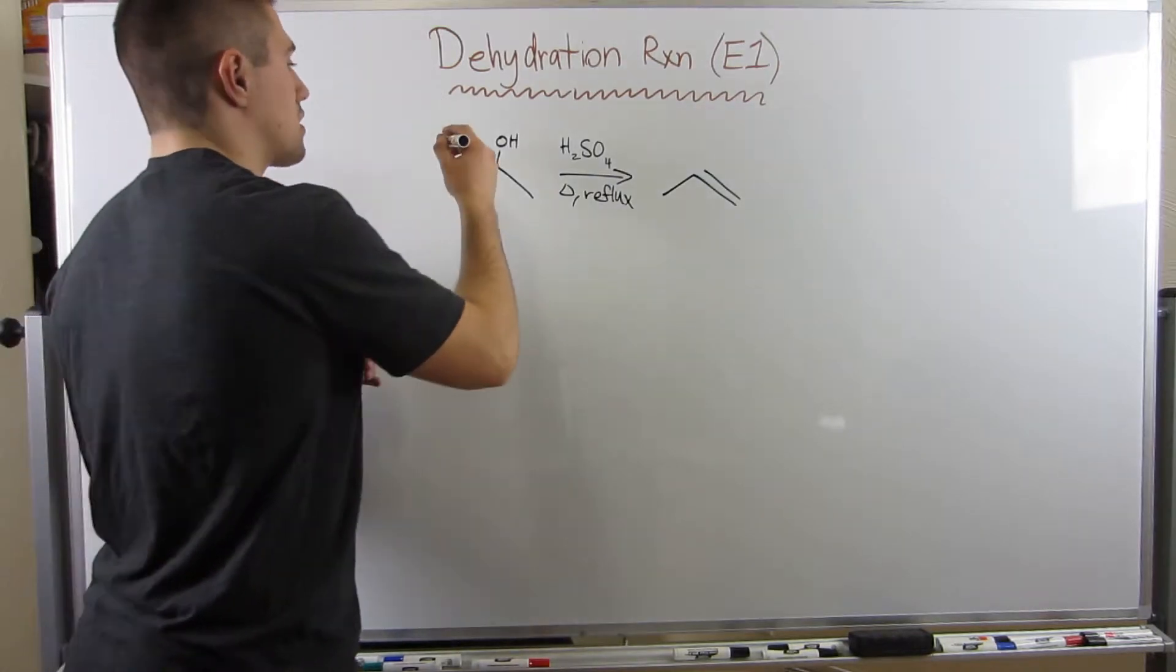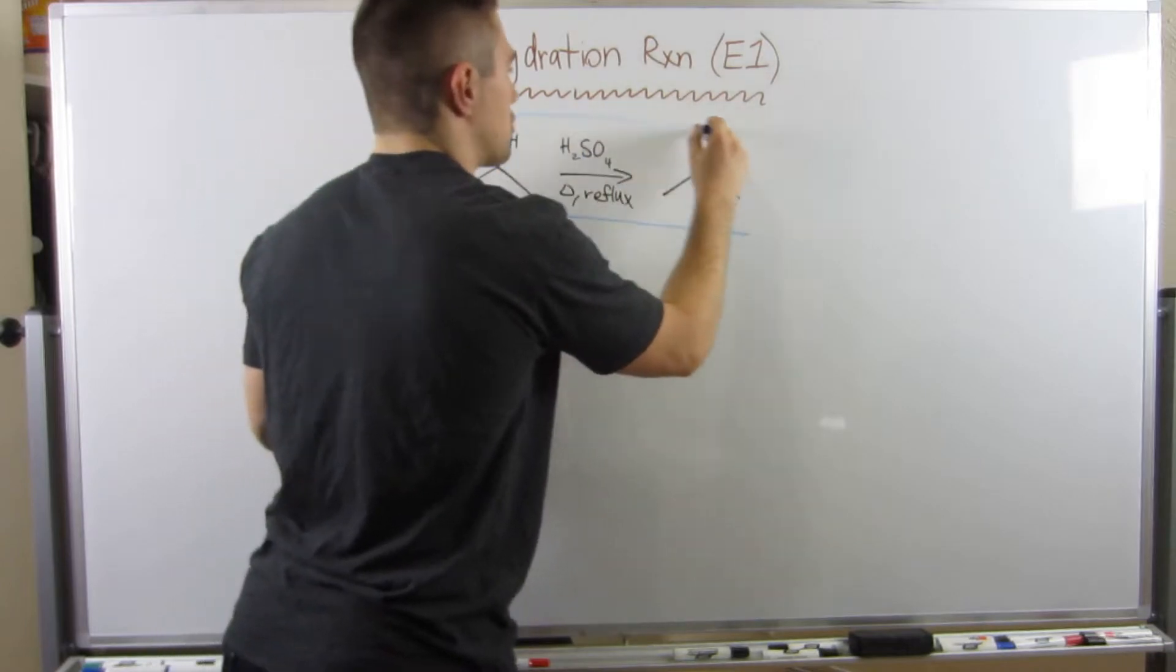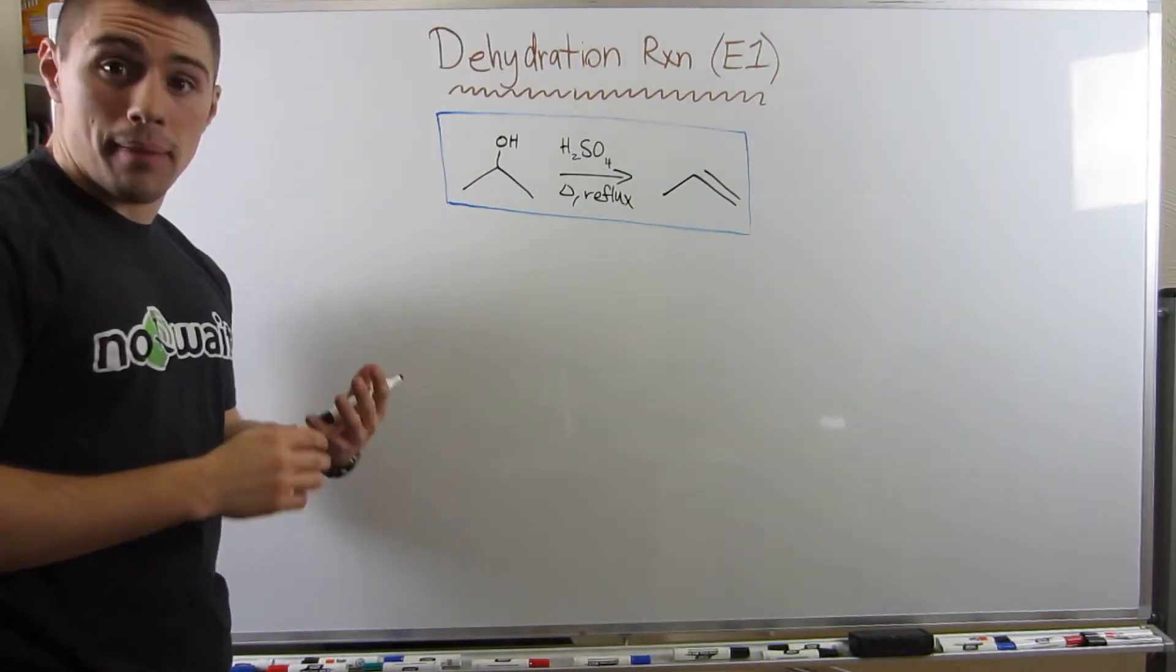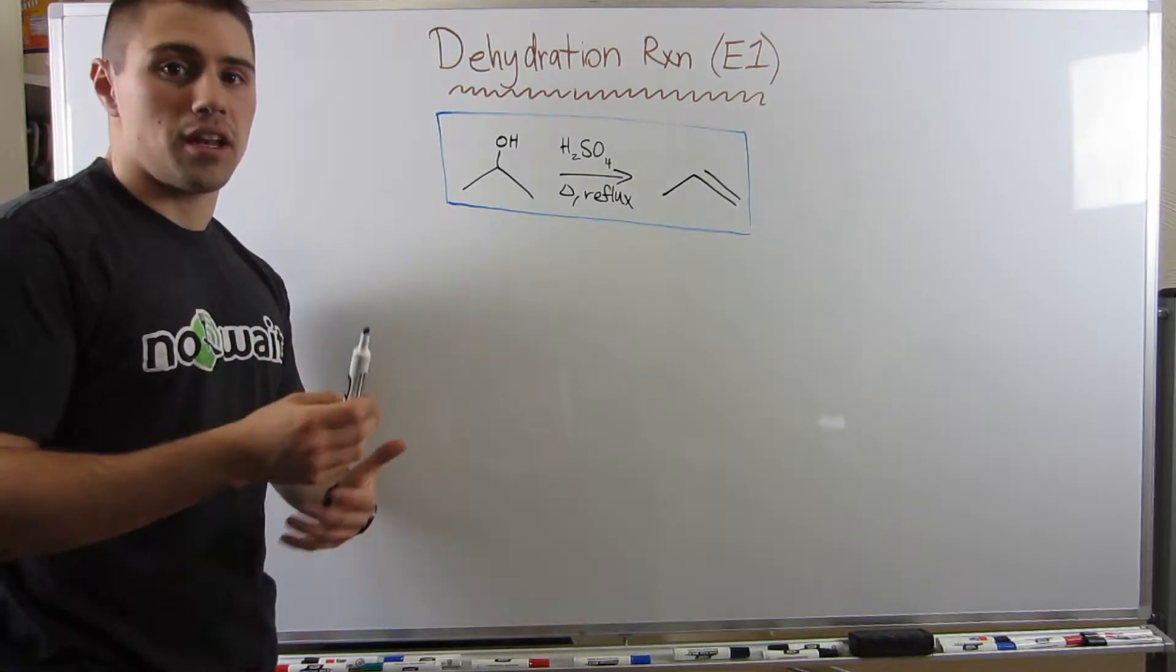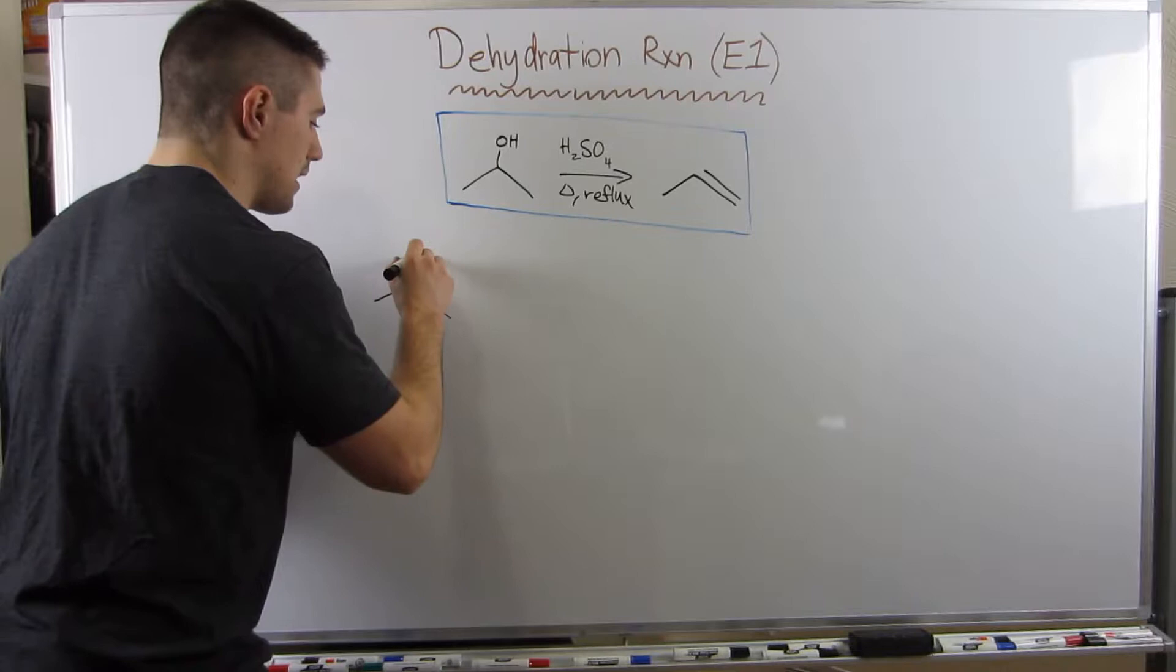What you will actually have occur, the transformation - it's an E1 mechanism, you drive off the alcohol and you make an alkene. You do a dehydration. So here's kind of what you see in your textbooks box. This is your reaction.